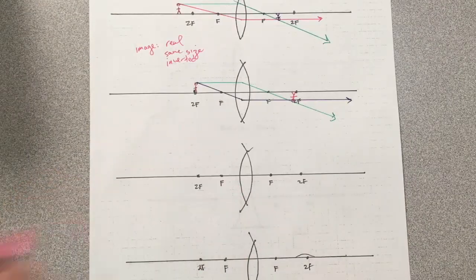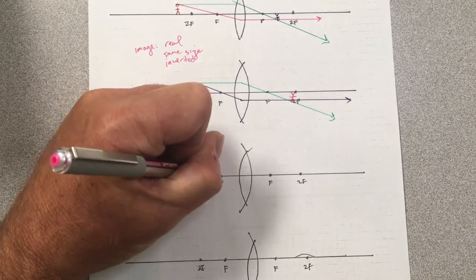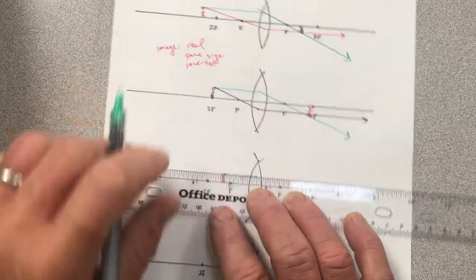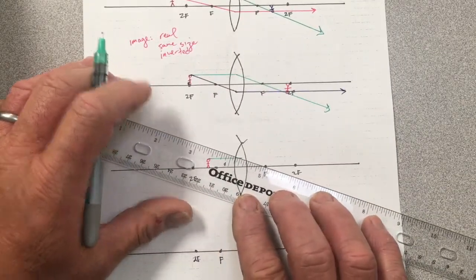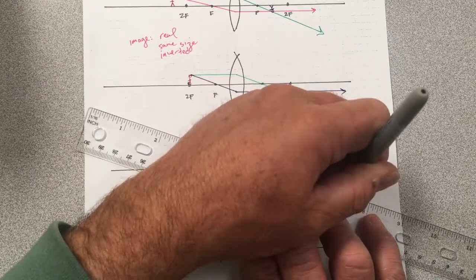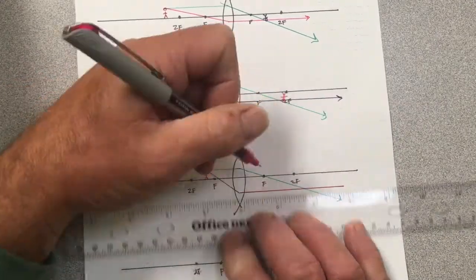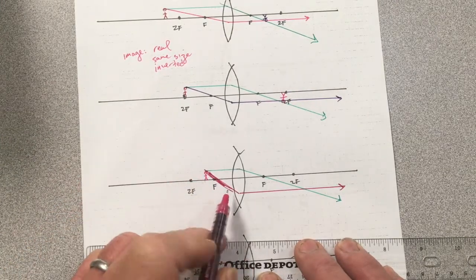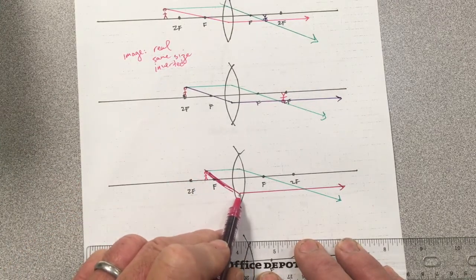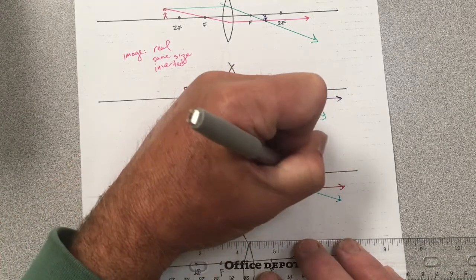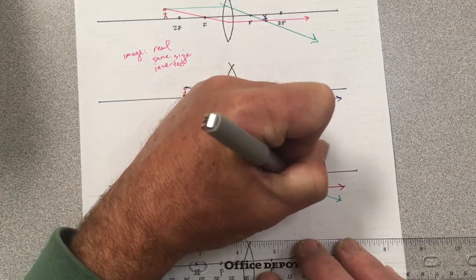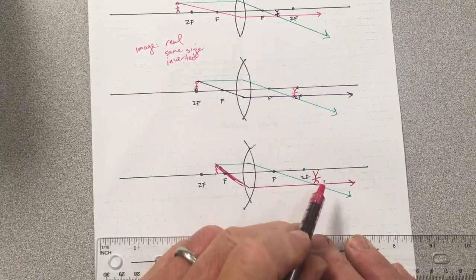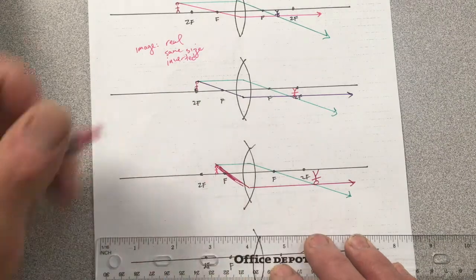Let's do the next case where we have an object somewhere in between F and 2F. Ray one goes through F after leaving the lens. After passing through the lens. Ray two goes, oops, I missed it. You get the idea though. It should have gone through F on the way to the lens, traveled parallel after leaving the lens. And under the principal axis beyond 2F, an inverted, real, and enlarged image is formed.